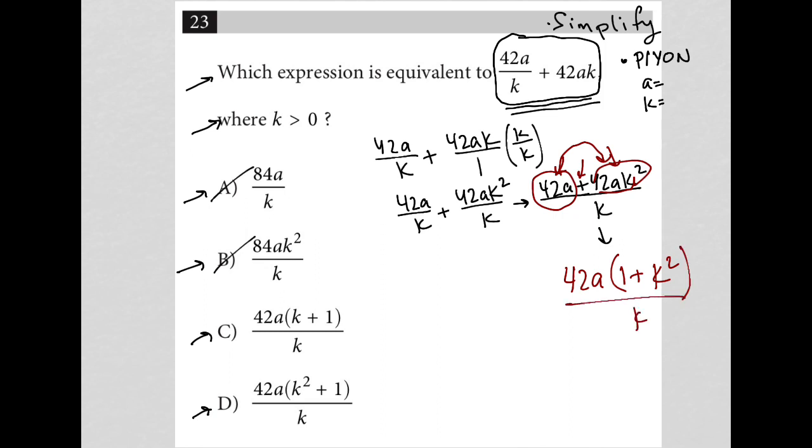So now do I have that answer? I do. It's actually choice D. The order of k squared plus 1 is different than what I have, but it doesn't really matter. 1 plus k squared is the exact same value as k squared plus 1. So that works. And therefore, choice D is correct. So that's the simplification method.